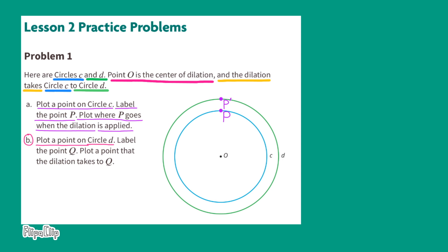Part B: Plot a point on circle D and label that point Q. Plot a point that the dilation takes to Q.